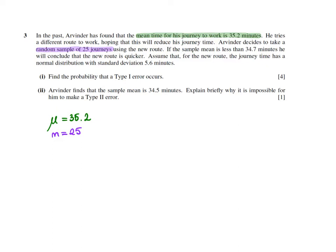Using a new route. If the sample mean is less than 34.7 minutes, he will conclude that the new route is quicker. So this problem is a bit different from the previous ones, because in this case I'm given the decision rule. So if the sample mean is less than 34.7, then he will conclude that the new route is quicker.